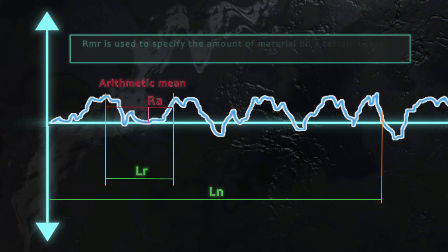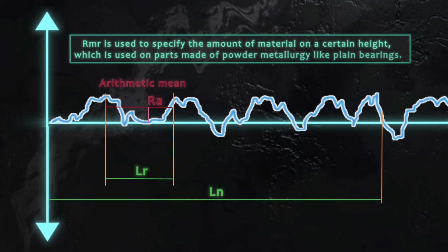Many parameters can be used for specialized applications. Rmr is used to specify the amount of material on a certain height, which is used on parts made of powder metallurgy like plain bearings.